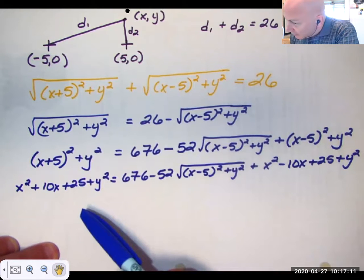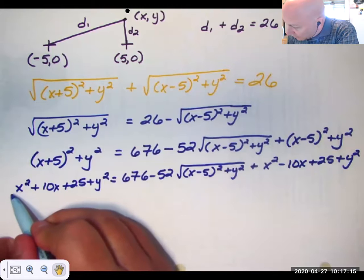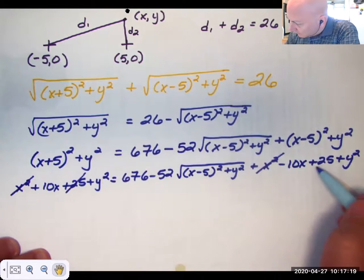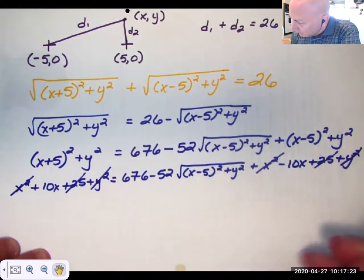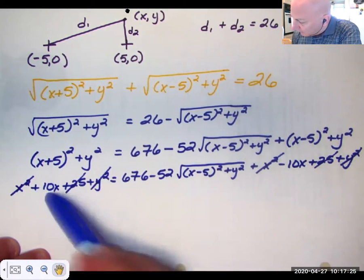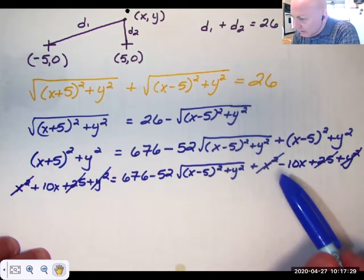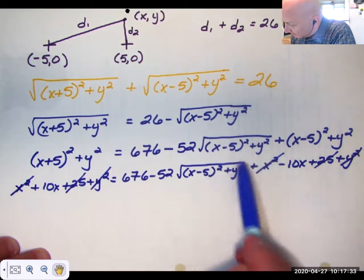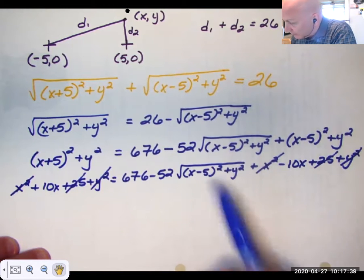Good times, huh? But now take a look. This term cancels. This term cancels. This term cancels. These don't because this is positive 10x and this is negative 10x. So what I need to do now is I need to get this radical term all alone on one side of the equal sign so I can square again. So I'm going to bring it over here to make a positive.